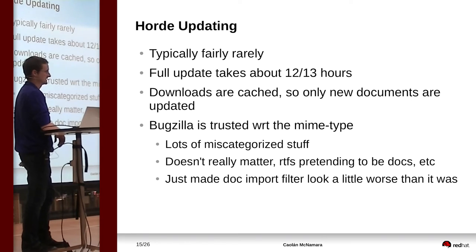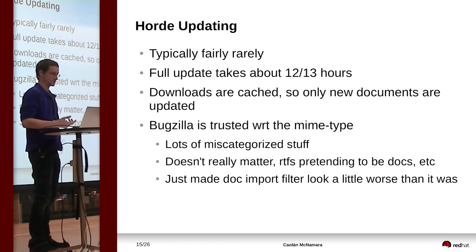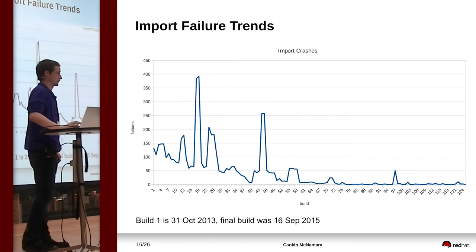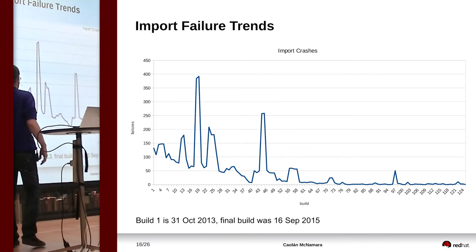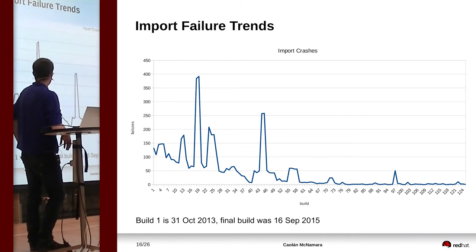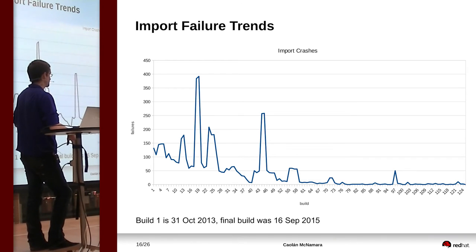There's lots of miscategorised stuff in Bugzilla, and there are lots of archive files like ZIPs and RARs that we don't download and aren't extracting. So there's capacity to find more documents in the existing sources — that's something worth looking into if there's an actual interest. This is the import failures over time — we have a crash test site at libreoffice.org, with a CSV file where every run adds another line. The first entry we have is October 2013.